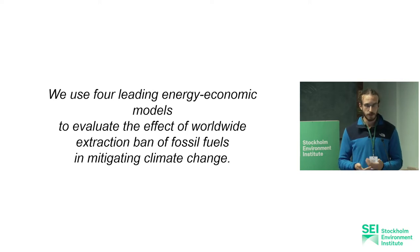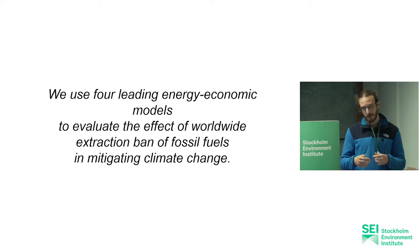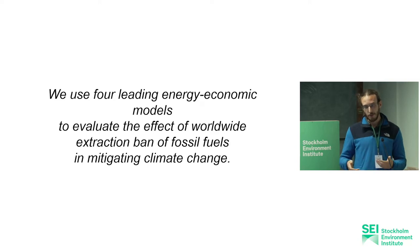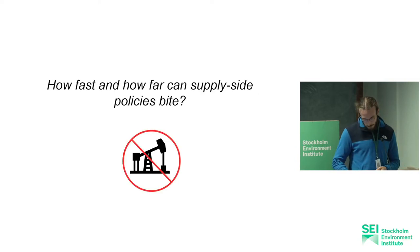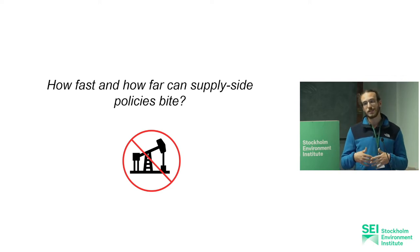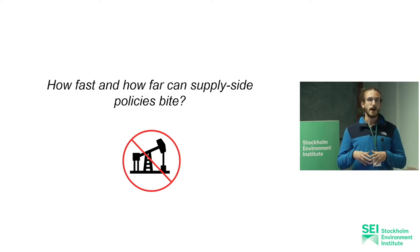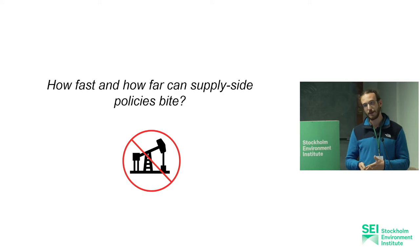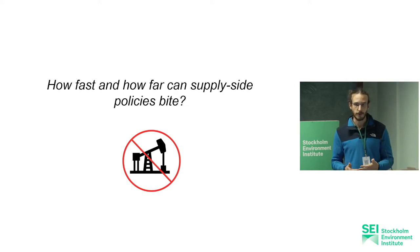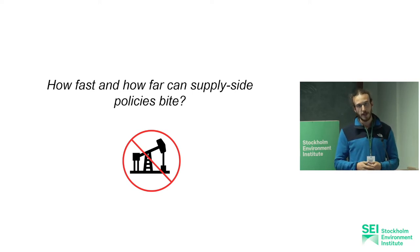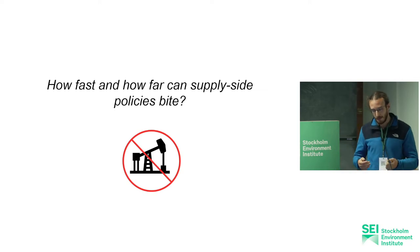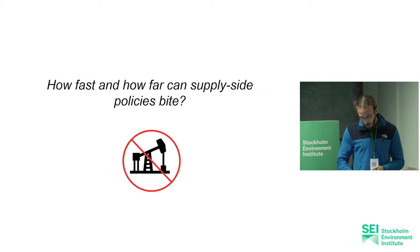The models we use are the WITCH model, which we maintain and develop at CMCC, and the TIAM-UCL model from UCL and Prometheus from NTUA. In particular, we want to assess two main research questions. The first one is how far and how fast extraction bans can go as a substitute of carbon pricing — we want to put extraction bans in the models and see what happens in terms of climate mitigation pathways.